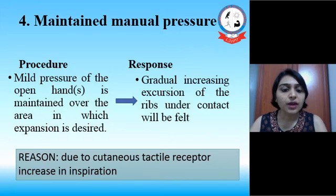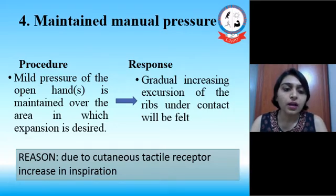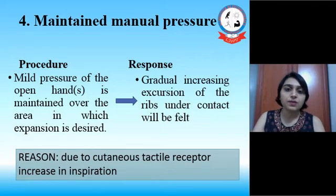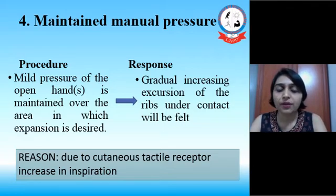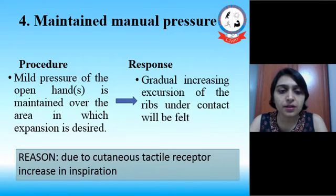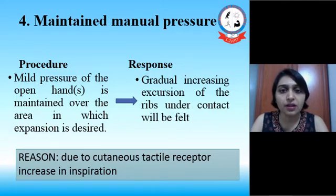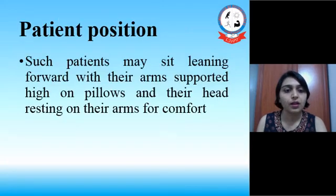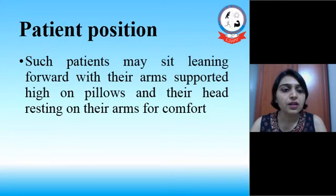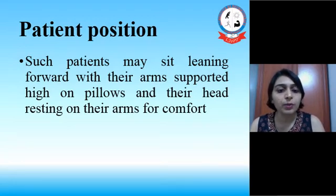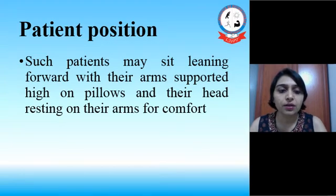The next technique is maintained manual pressure, in which we have to give mild pressure with the open hand. We have to maintain it over the area in which expansion is desired. We may find a gradual increase in excursion of the rib under the contact. The reason is due to cutaneous tactile receptors increasing respiration. The patient position is such that the patient may sit leaning forward with their arm supported on a high pillow and their head resting on their arm for comfort.